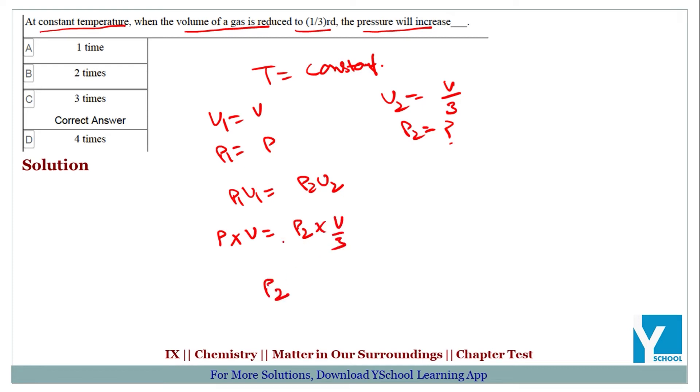Toh, kya ho gaya? V ke saath V cancel ho gaya. P2 becomes 3P. Or in other words, P2 becomes 3 times P1.